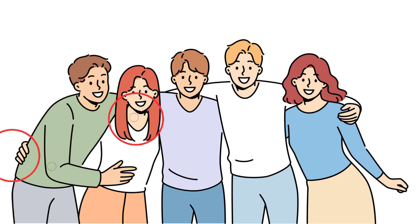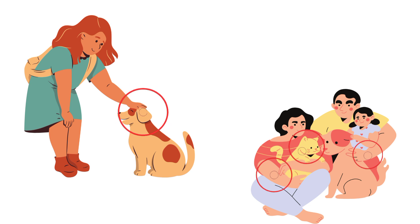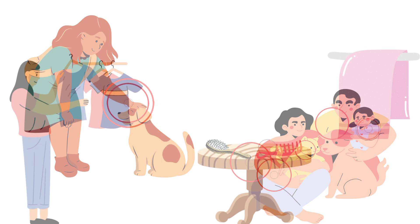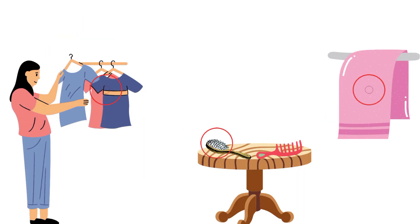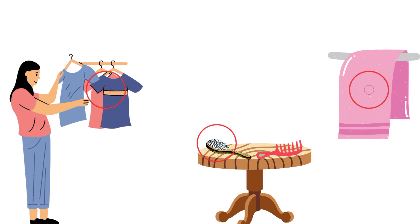Transmission of this disease can occur by direct skin-to-skin contact with infected people or pets, or indirectly by contact with items such as barber clippers, hair from infected people, shower stalls, or floors.